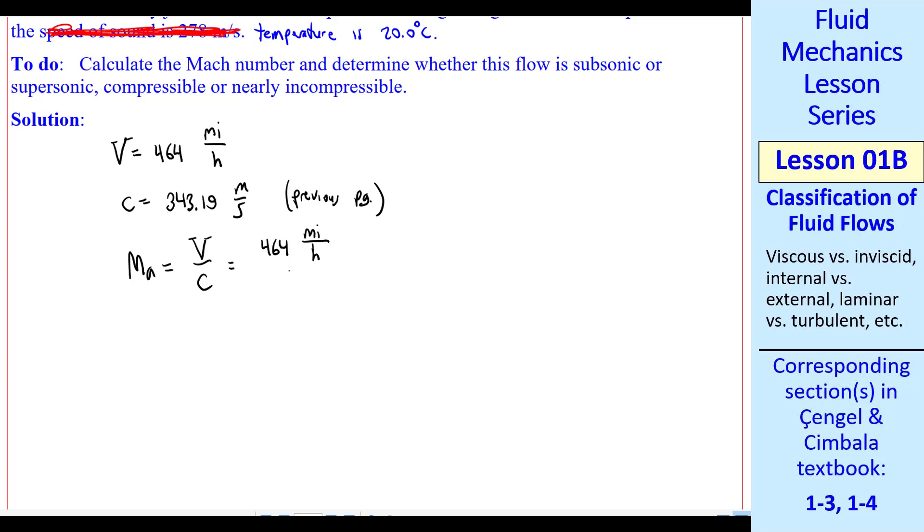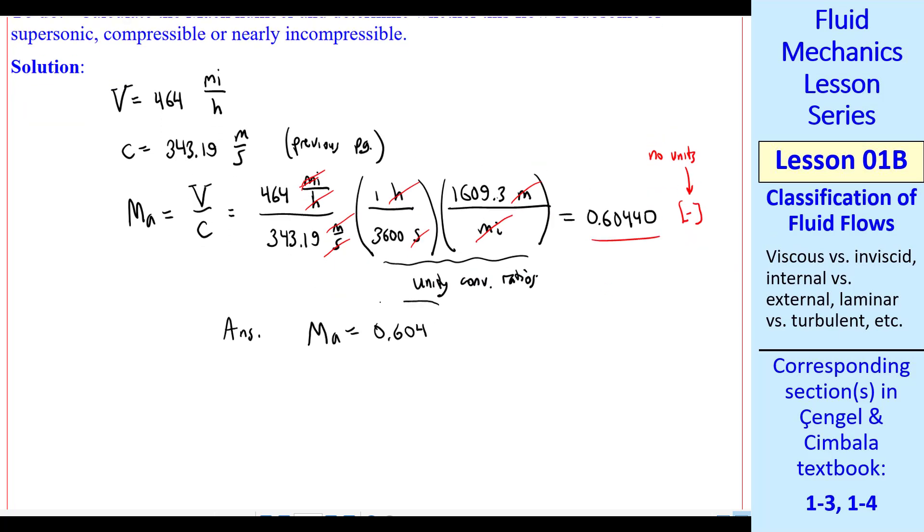The Mach number is then defined as V over C. Again, always put in your units with your numbers. 464 miles per hour, 343.19 meters per second. We have to convert miles per hour to meters per second. Most students just look this up on the internet. But the proper way to do this is to convert units using unity conversion factors. One hour is 3600 seconds, 60 times 60. And then 1609.3 meters is equivalent to a mile. Again, both of these are unity conversion ratios. When I plug this into my calculator, I get 0.60440. Notice that all the units cancel, miles cancel, meters cancel, seconds cancel, and hours cancel. So this is no units, which sometimes is indicated this way. But if you just leave the number by itself, that implies there's no units. So my final answer is Mach number is 0.604 to three digits. Notice that I kept this to about five digits here just to avoid roundoff error. But my final answer is three significant digits since I'm limited by three digits in the given information.